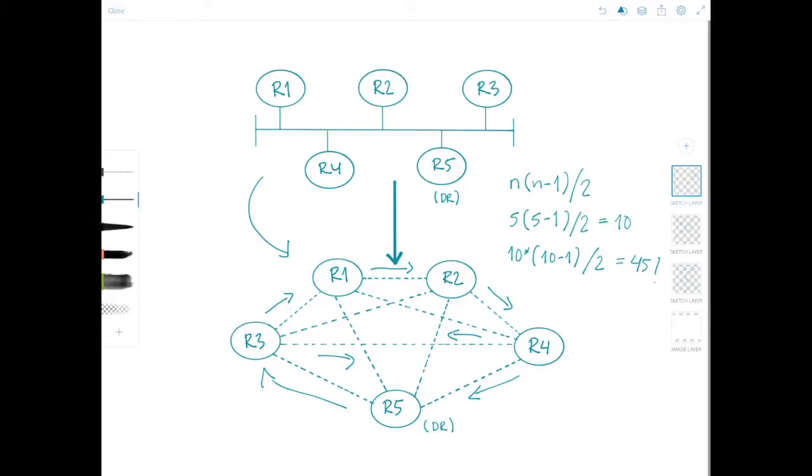So here's where the designated router comes in. So the designated router has two jobs. One, to represent the multi-access network and its attached routers to the rest of the OSPF area. And two, to manage the flooding process on the network. So the concept behind the DR is that the broadcast link itself is considered a pseudonode or a virtual router.